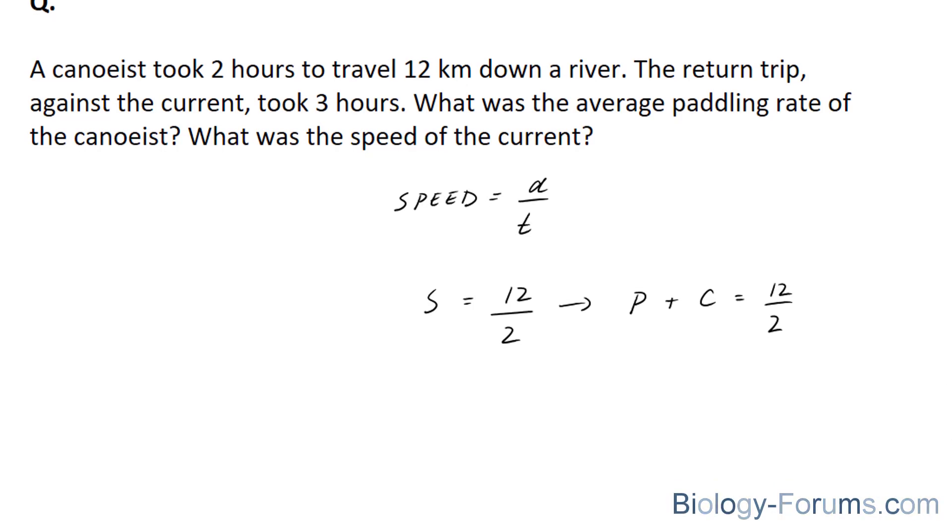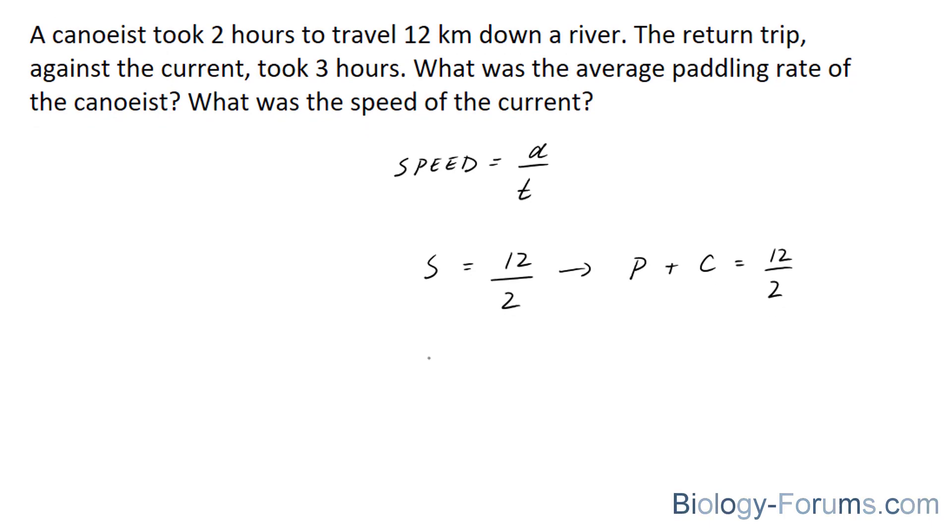Now when he's going against the current, you have S is equal to 12 over 3. The distance stays the same, but the time changes. And this time, he's using his personal speed, but since he's going against the current, it's minus C is equal to 12 over 3.